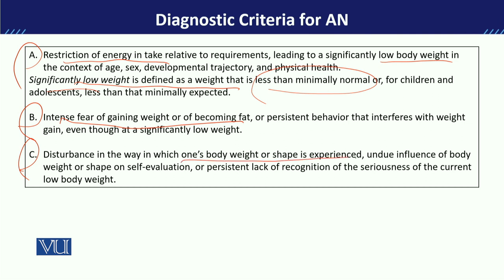Criterion C is the disturbance in experiencing body weight and shape. When you speak with these children, they report feeling fat, and that is why they try to reduce their weight. They do not recognize that their body weight is actually very low. So these are the three criteria — A, B, and C — which you can use to identify anorexia nervosa.